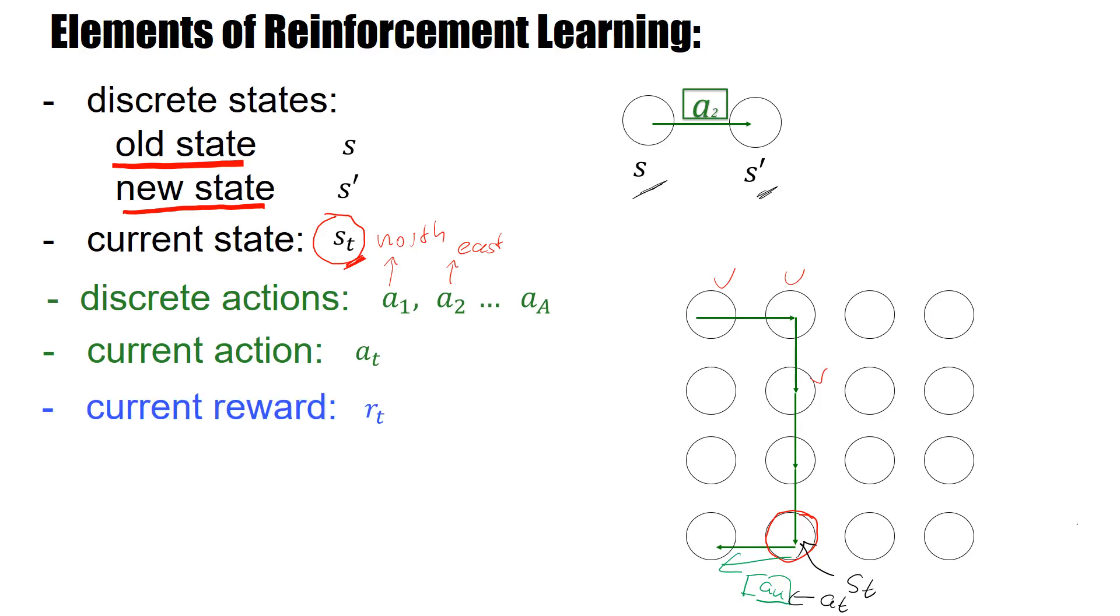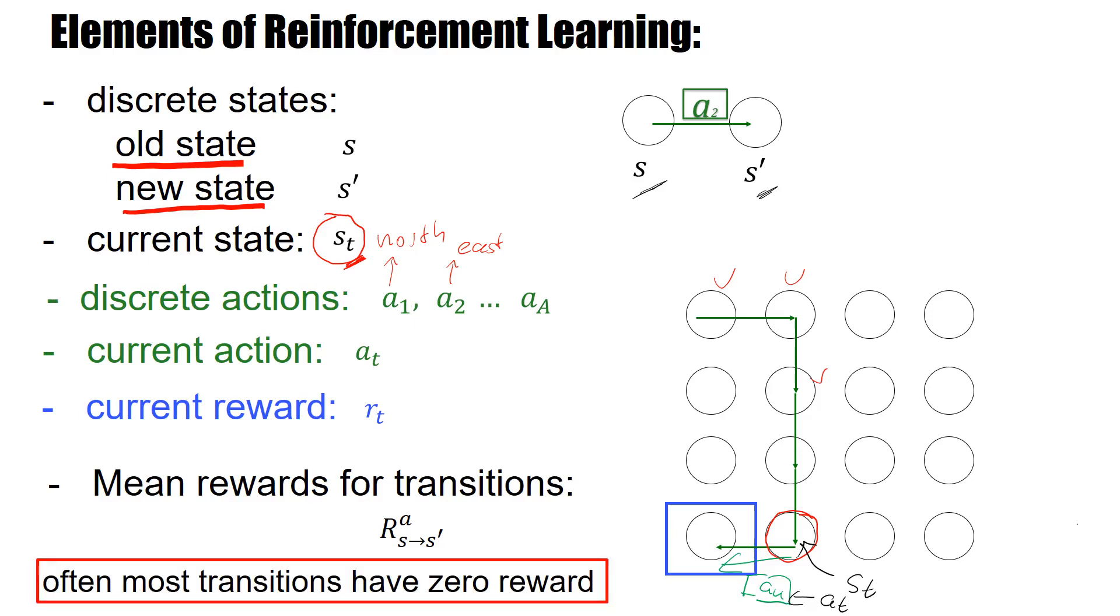And then I can say, what's the current reward, and actually here I get a reward. However, rewards are sparse. In most cases, I will have no reward. Most transitions have zero reward. So here it's only this final transition from my state at time t, s_t, to the state at time t plus one, that gives me the reward.